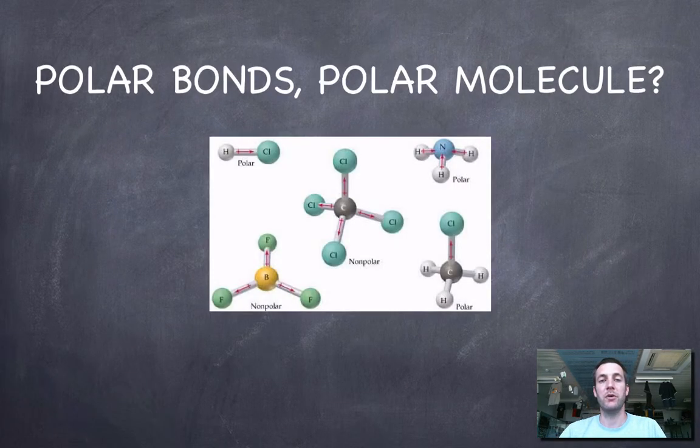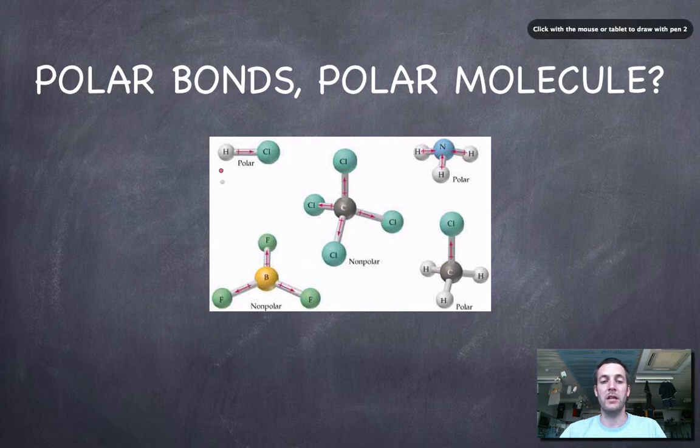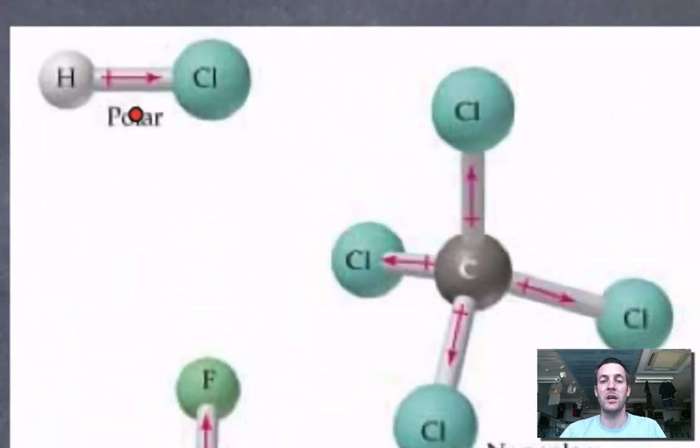Let's have a look at a few other shapes that we've looked at recently and decide whether polar bonds will make a polar molecule. Now if we've got a linear molecule with two different atoms, well there is only one bond, so if the bond is polar then the molecule must be polar.